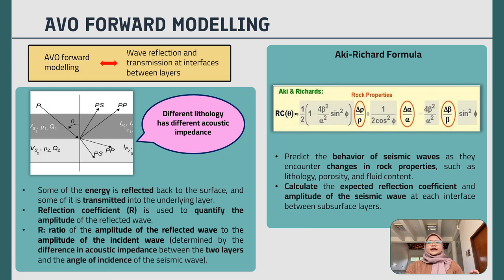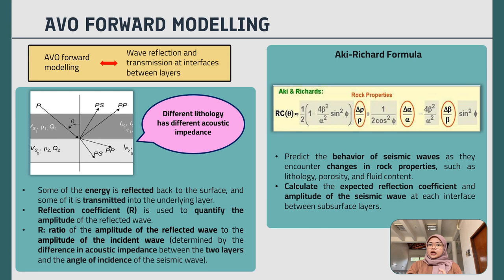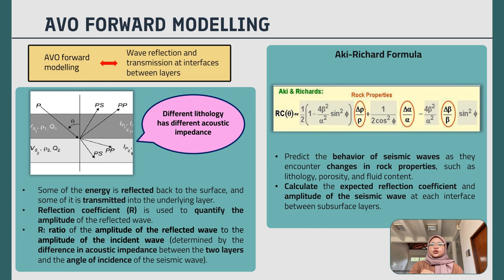The theory behind AVO forward modeling is based on the principle of wave reflection and transmission at interfaces between different geological layers. When a seismic wave encounters an interface between two geological layers, some of the energy will be reflected to the surface and some will be transmitted into the underlying layers. Different geology has different acoustic impedance, and the amplitude of the reflected wave is dependent on the difference in acoustic impedance between the two layers. In AVO forward modeling, the reflection coefficient R is used to quantify the amplitude of the reflected wave — it is the ratio of the amplitude of the reflected wave to the amplitude of the incident wave.